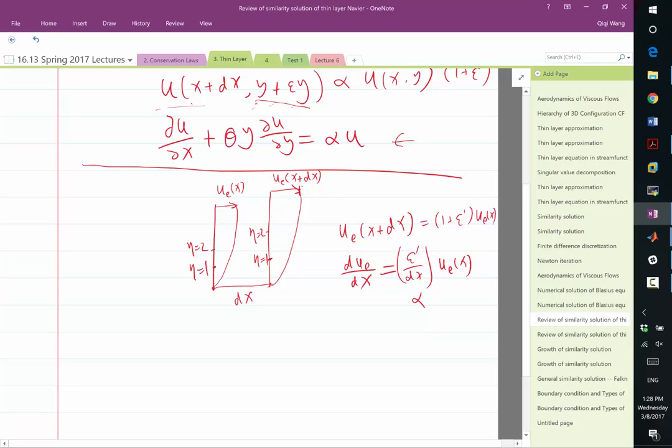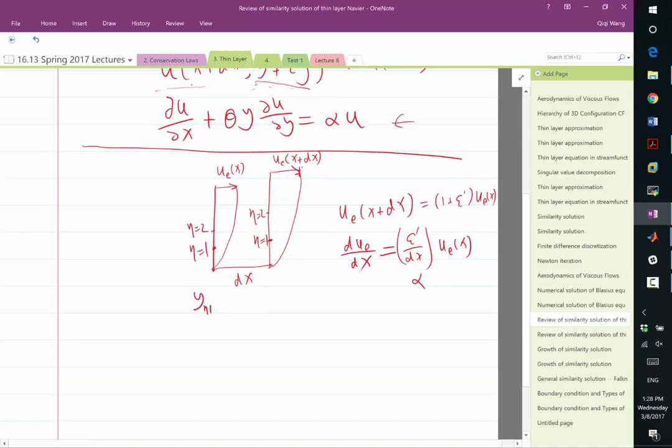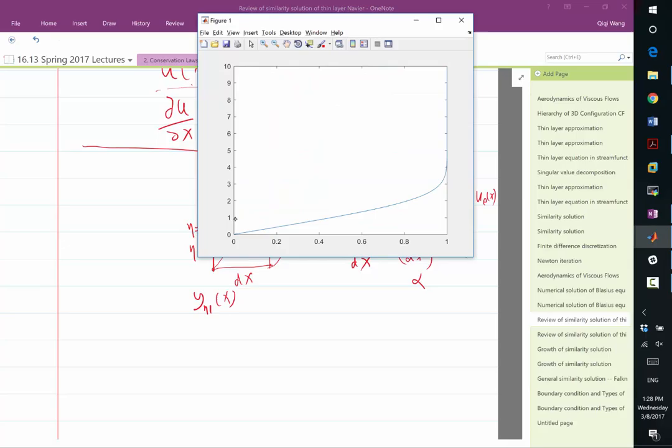So if eta equals 1 corresponds to a 0.4, I shouldn't use y here. So let me just say y eta 1 at this location. It's a function of x. Y eta 1 is basically where is the, how thick is the boundary layer from here to here?